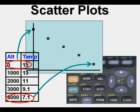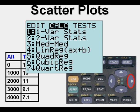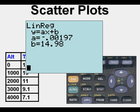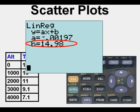We go to STAT, CALC. Since our relationship looked like it was pretty linear, we can go down and run a linear regression by pressing 4 and then ENTER twice. We get a slope of negative 0.00197 and a y-intercept of 14.98.